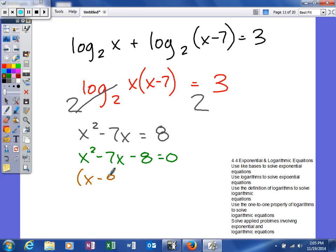So x minus 8 and x plus 1. When you set both those equal to 0 and solve, you get x is equal to 8 and x is equal to negative 1.